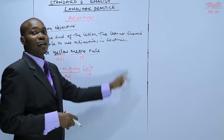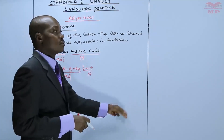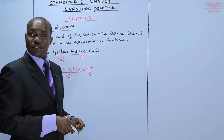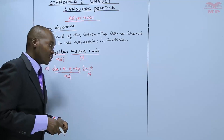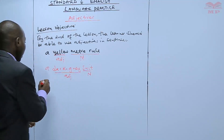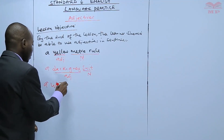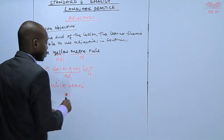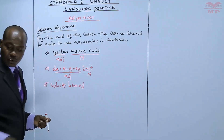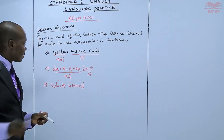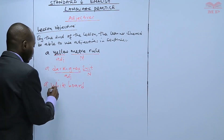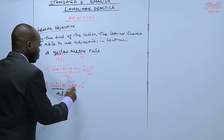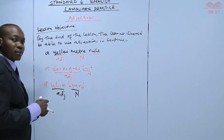Look at my board here. What's the color of this board? This is white. So we shall say a white board. White is an adjective, and board is a noun.